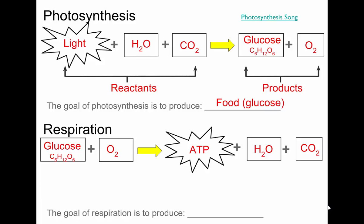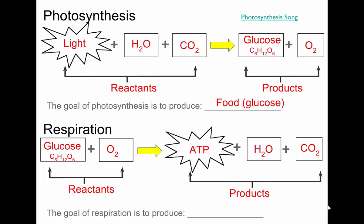Since this process releases lots of energy for the cell, what organelle do you think it takes place in? Luke answers correctly — this is happening in the mitochondria of our cells all the time. The reactants are on the left side of the arrow; the products are on the right. The goal of respiration is to produce energy for the cell. Every single cell in your body needs a constant supply of ATP to stay alive. That's why if you can't get oxygen, you can't survive — your cells can't go through respiration and don't produce energy.